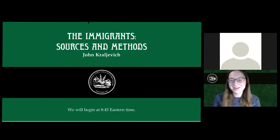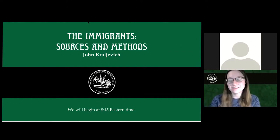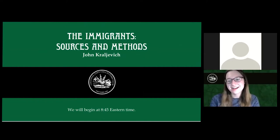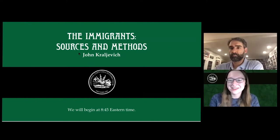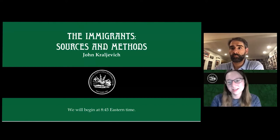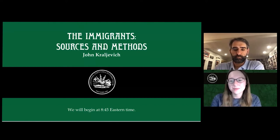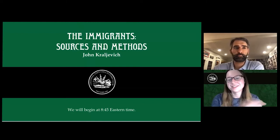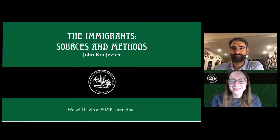Good evening and welcome to our fourth talk of the C4 Convention. This is the third and final Newman Lecture of the series, and we'll be hearing from John Kraljevic this hour. He's very well known in the industry as a contributor to the Red Book catalog, has catalogued many important collections including the Poe collection, is a member of the Rittenhouse Society and a fellow at the ANS.